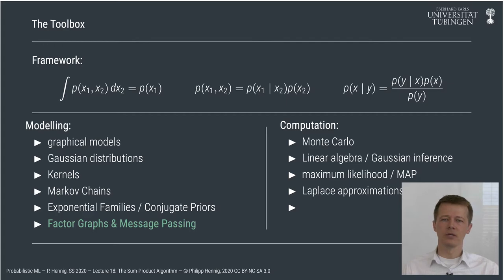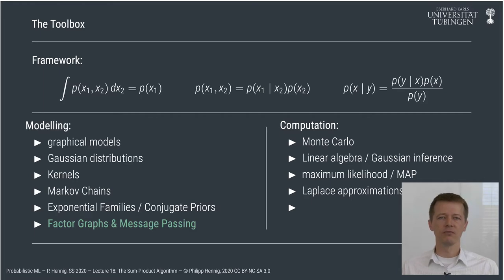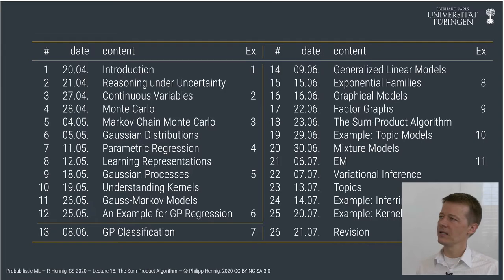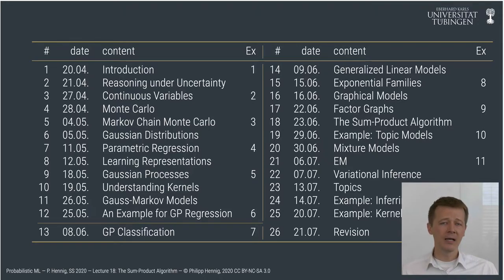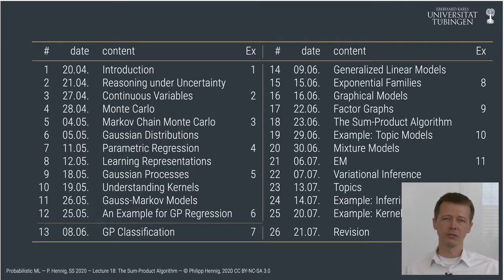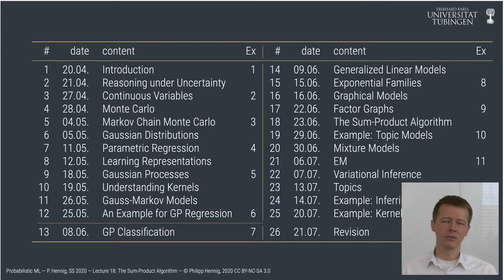Exponential families are relatively restricted because they are specific to certain combinations of variables. For more general relationships between variables, we returned to the idea of graphical models in the previous two lectures. We saw that there is more than one way of graphically representing a probability distribution. If you have a generative model and can write a probability distribution in terms of conditional distributions, you can use a directed graph to visually represent it, allowing inference of conditional independence structure through d-separation.